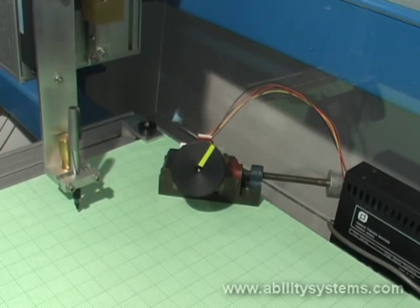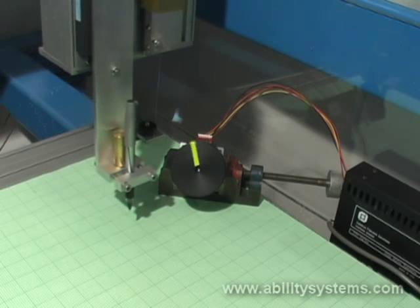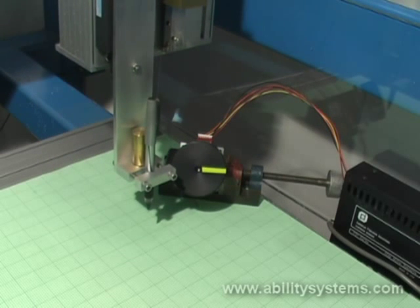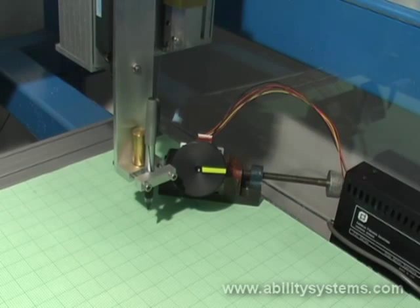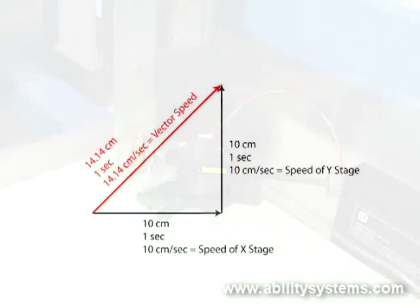Thus all motors start together, finish together, and subtend a proportional distance to each other throughout the extent of the motion. G-code controller translates rapid traversal G01 commands into Indexer LPT's move command since it is the most time efficient method to get all motors from one position to another. Rapid traversal is not the best method to control something like a cutting tool, however, because using this method the speed of the tool across the work is dependent on the angle of the interpolated line.